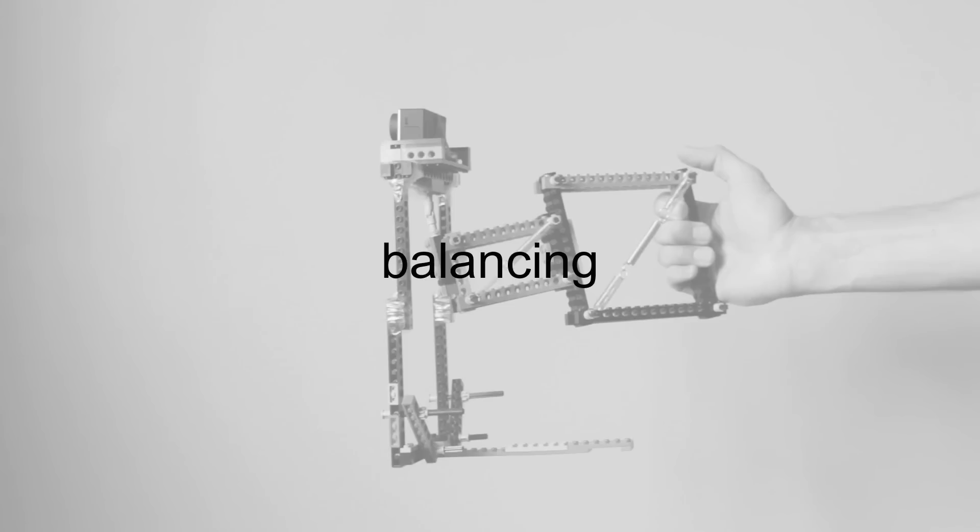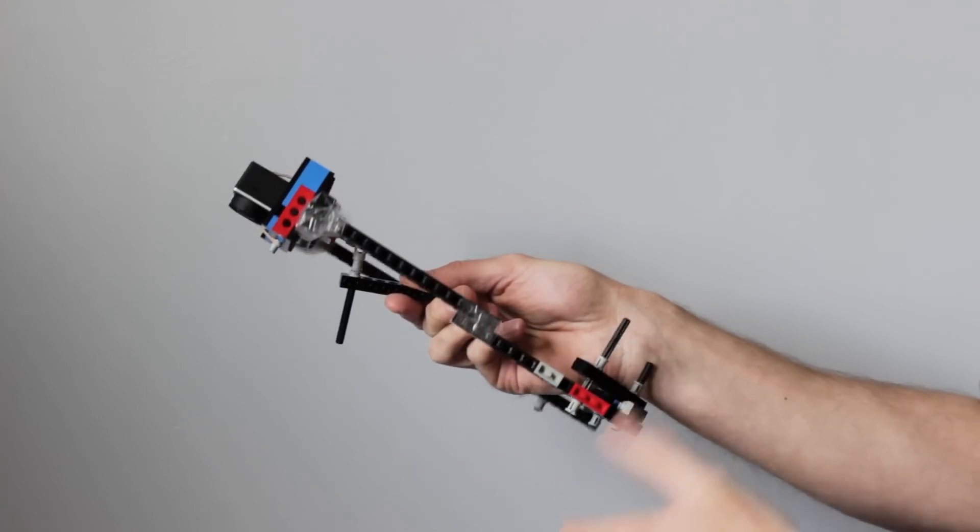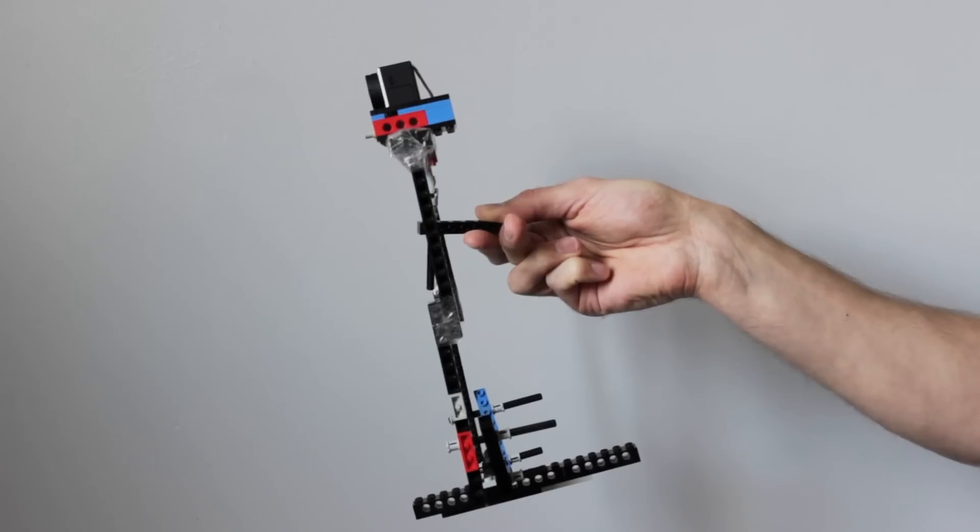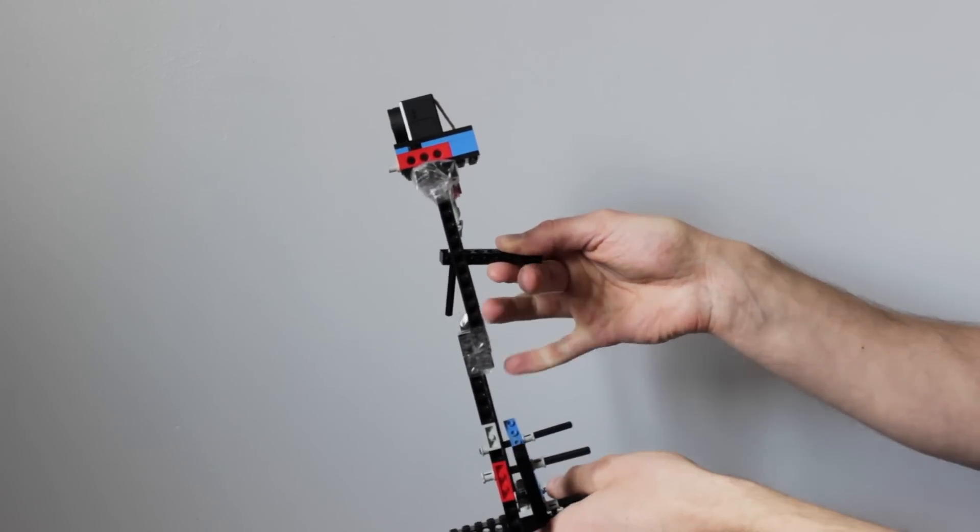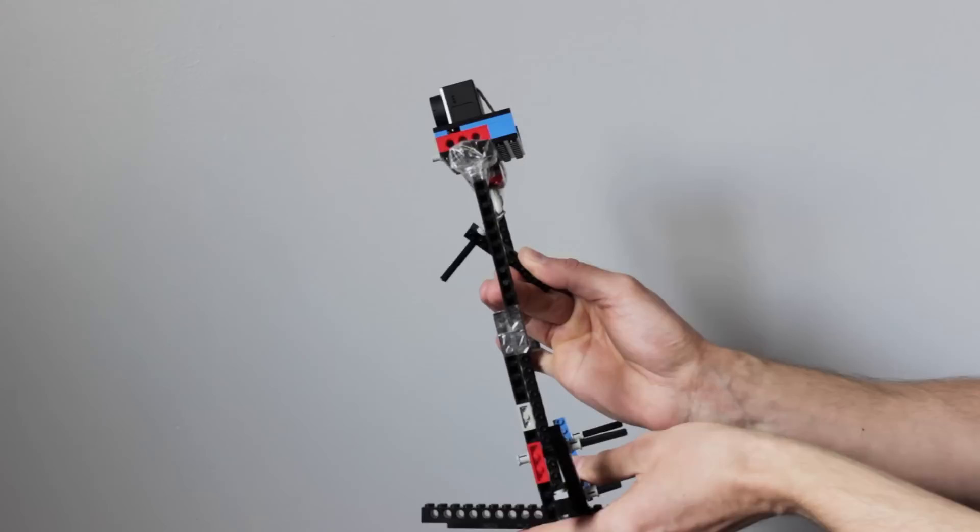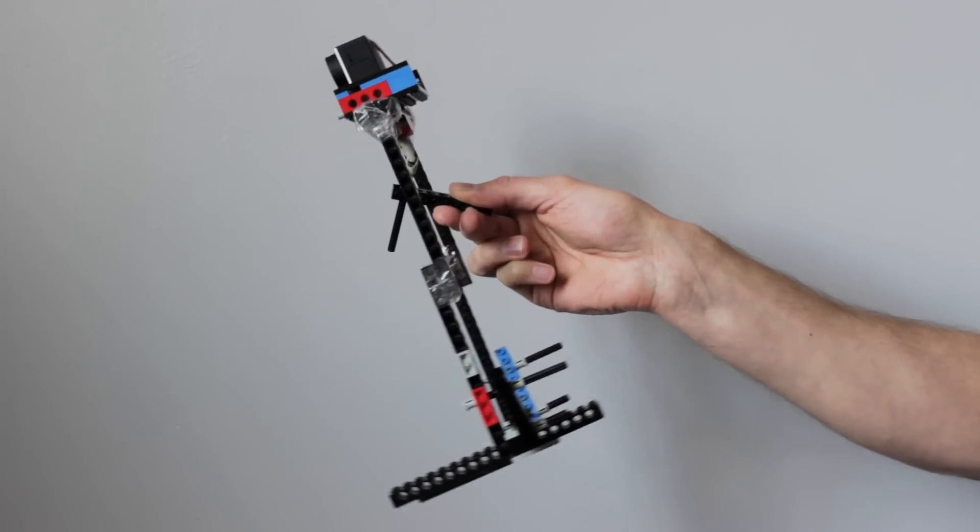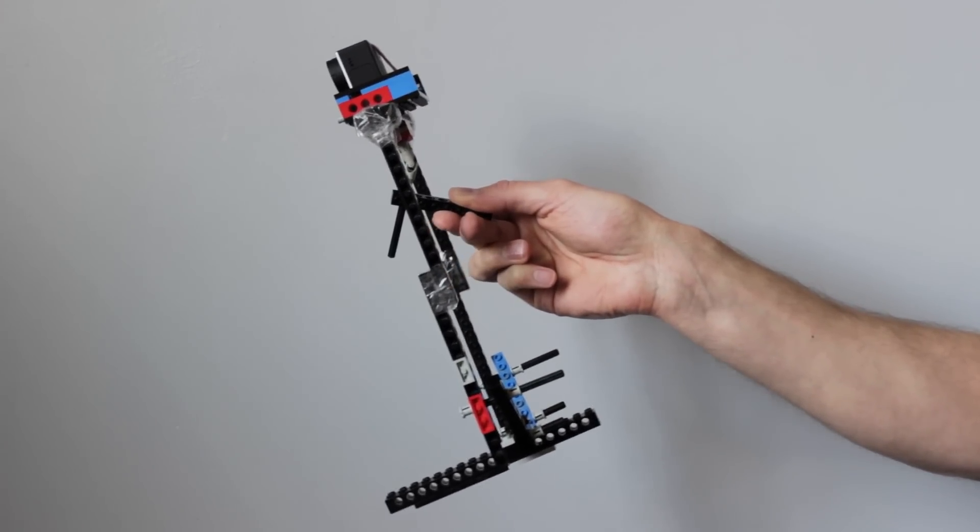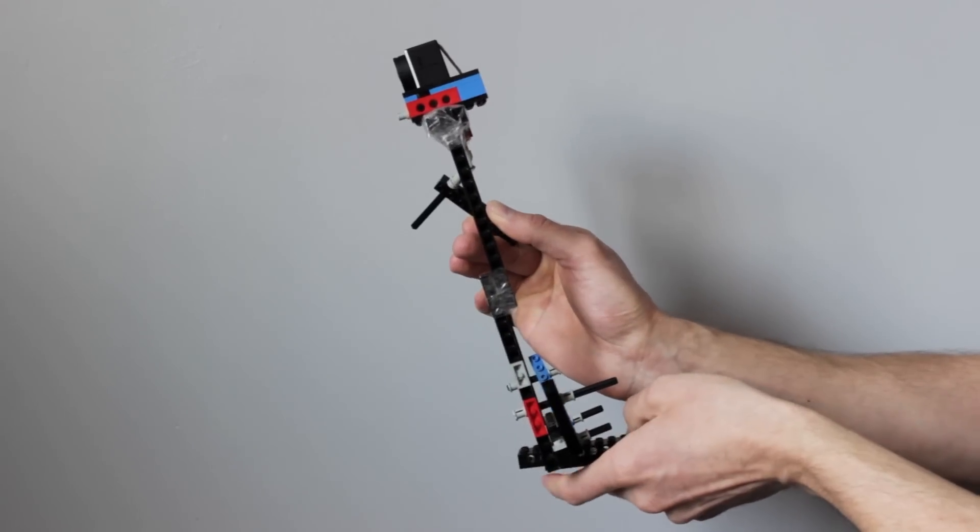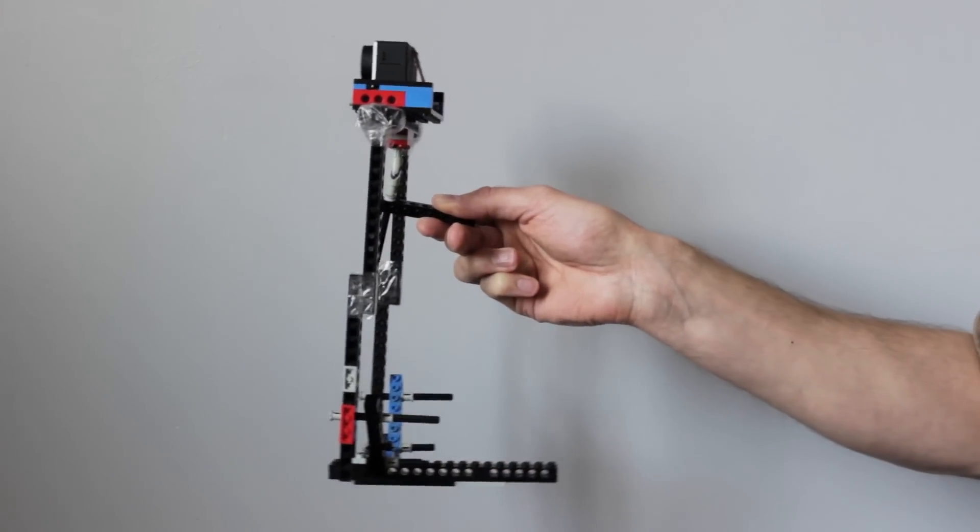Now I have to balance the set up. Currently it's really top heavy, so I'm going to need to add weight to the base. Here the arms aren't quite upright, so I know I need to adjust the weight. It's obvious when you've gone in the wrong direction. This is about right.